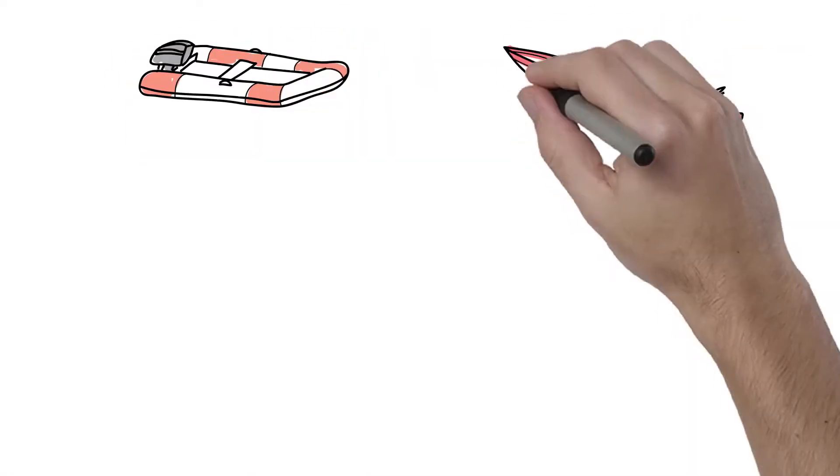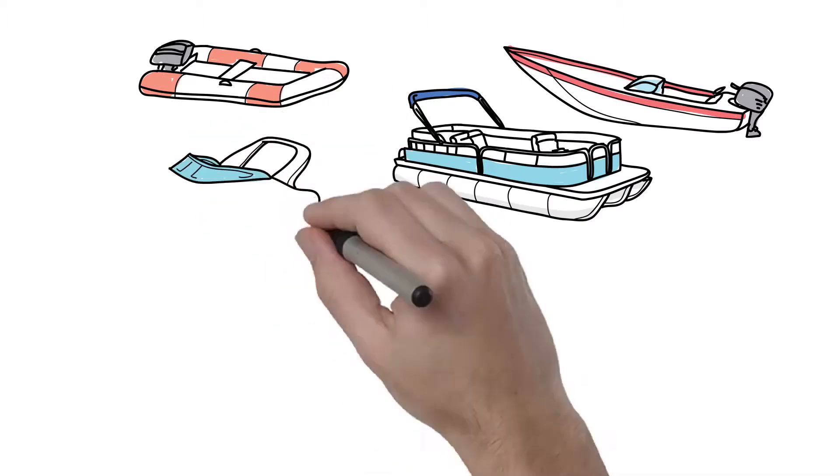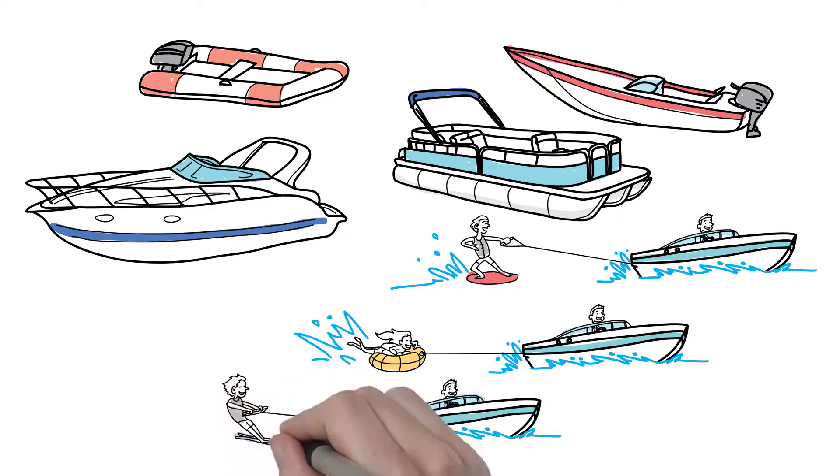Stingray has the largest selection of hydrofoil models in the world designed for boats of all kinds including inflatables, bass boats, pontoons, runabouts, and boats pulling wakeboarders, tubers, and skiers.